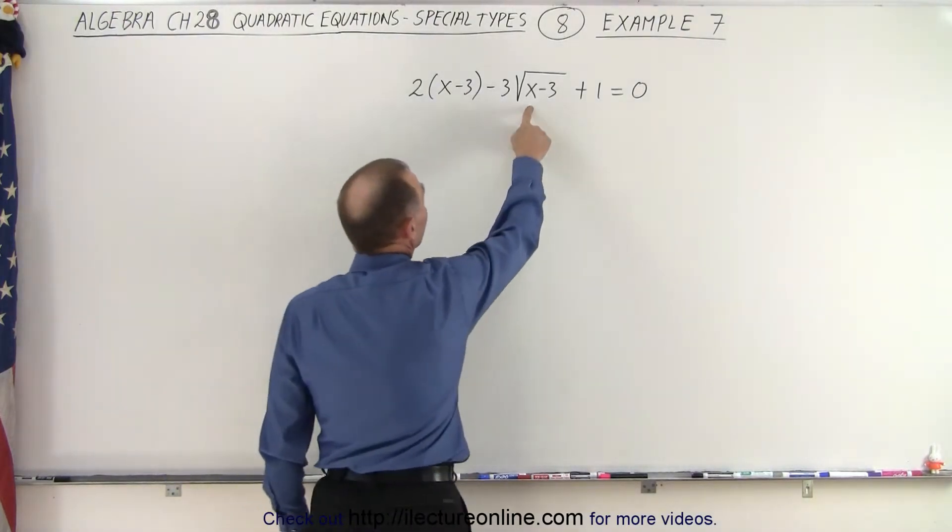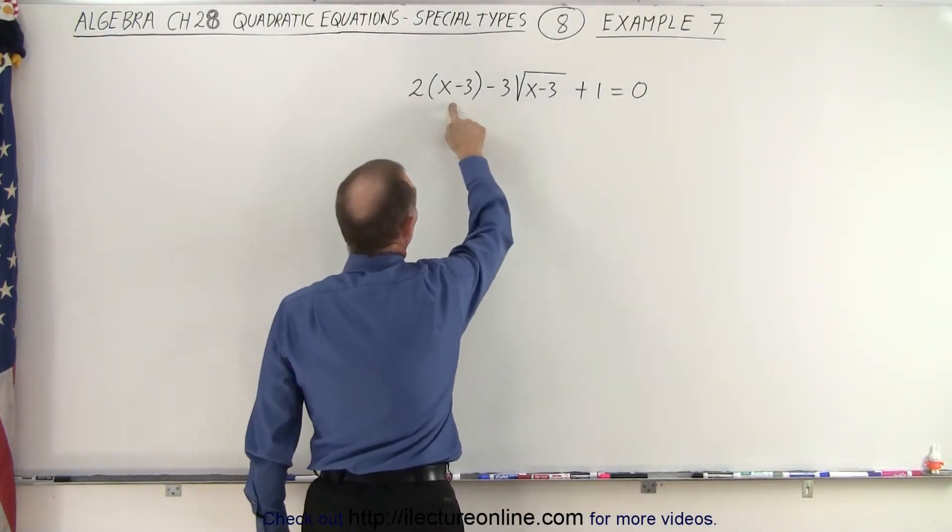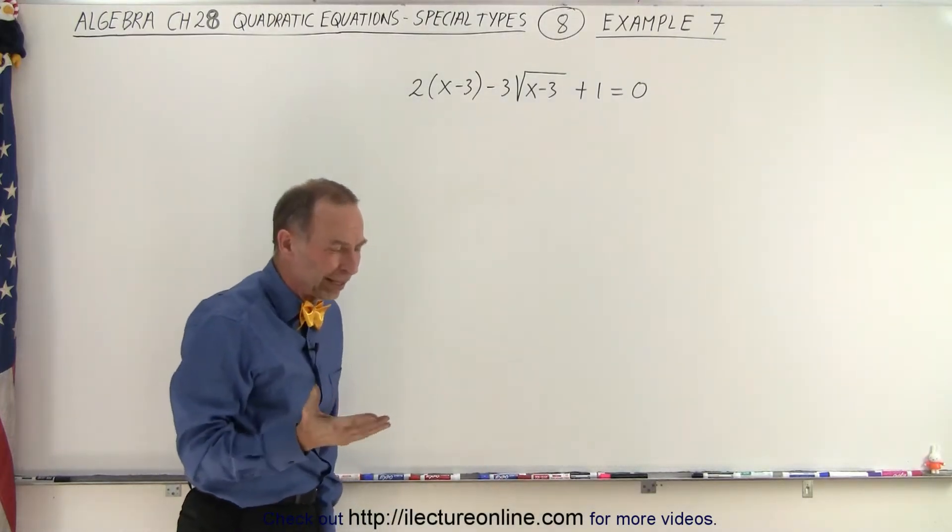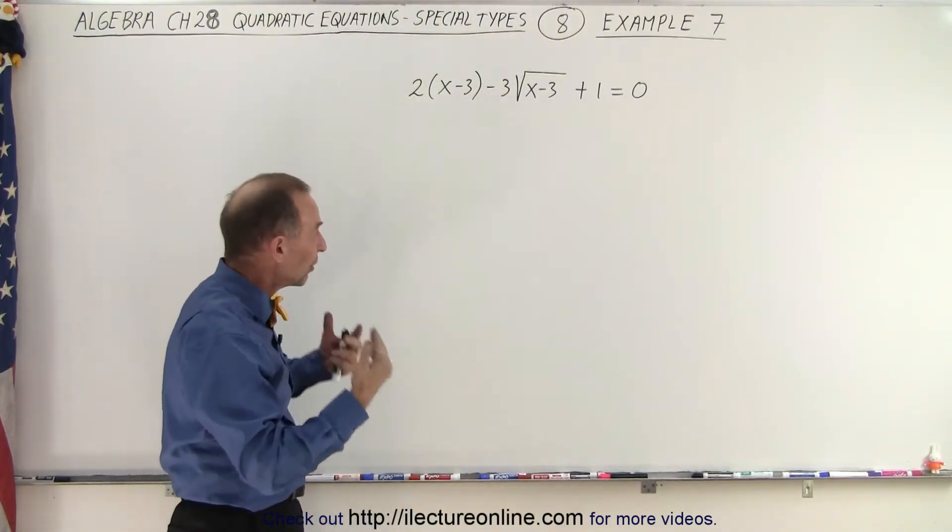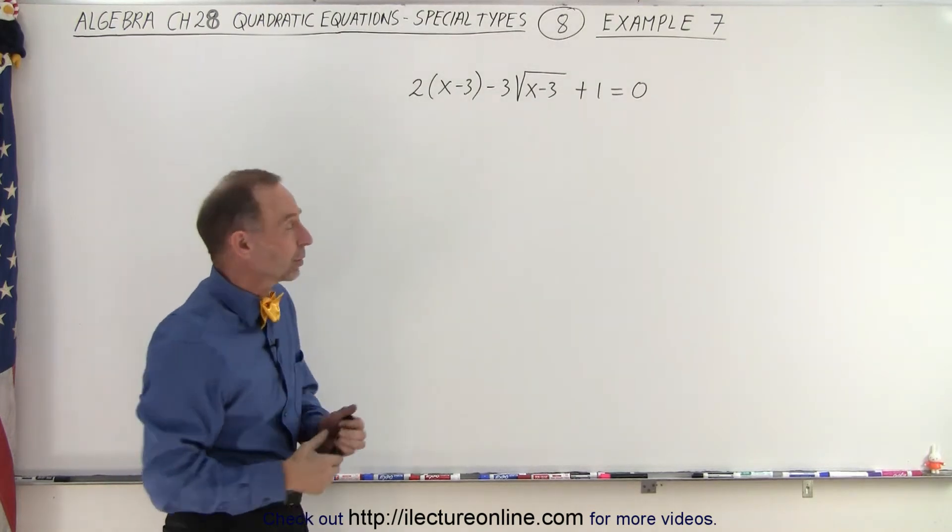But notice that the middle term is to the one-half power, and the term here in the front is to the first power. So at least it's double the power, which makes you think that yes, we can turn this into a quadratic equation.